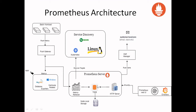After the Prometheus server processes all this, it pushes alerts to the alert manager. There are different types of alert receivers. For example, you will get an email notification telling you that your system's CPU storage is running out, or that memory is full — such notifications come through the alert manager.